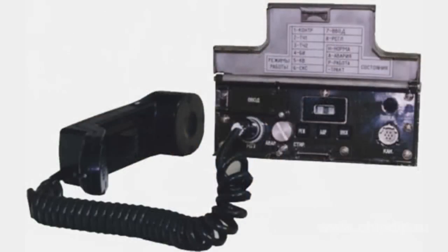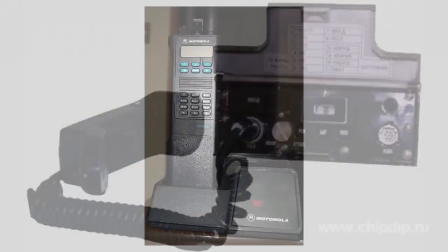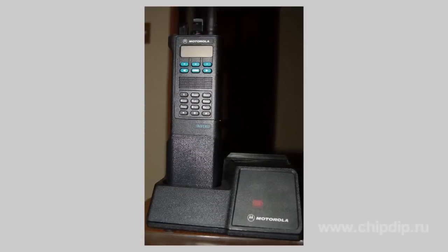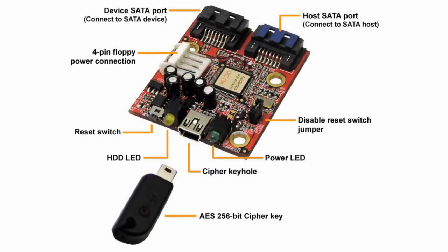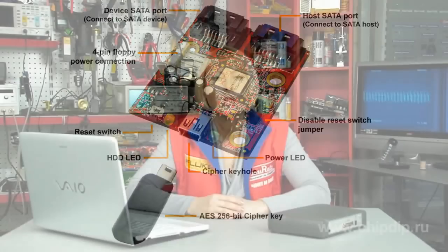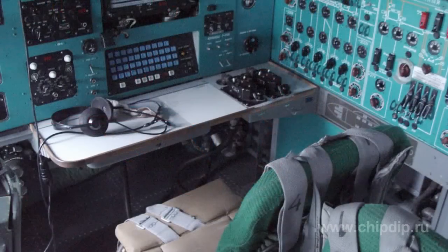There are three kinds of hardware encryption means – encryption units in data channels, encryption modules carrying out overall operation with keys, and encryption upgrade boards installed in personal computers. The main advantage of hardware means is high operating speed.